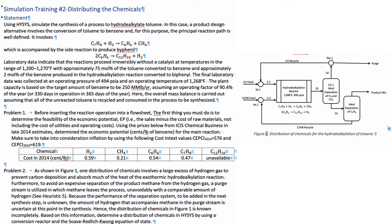Using the prices below in this table from the ICIS Chemical Business in late 2014 estimates, determine the economic potential in terms of cents per pound of benzene for the main reaction. Make sure to take into consideration inflation by using the following cost index values, CEPCI of 2014 and the CEPCI for 2019.